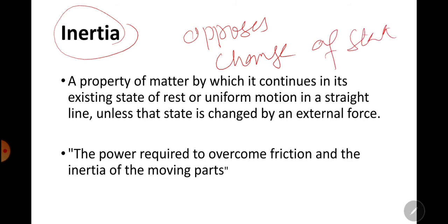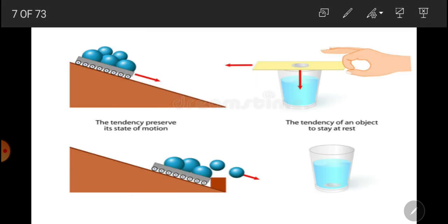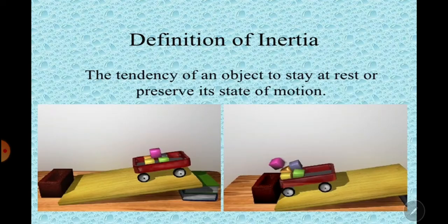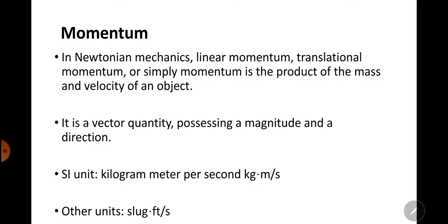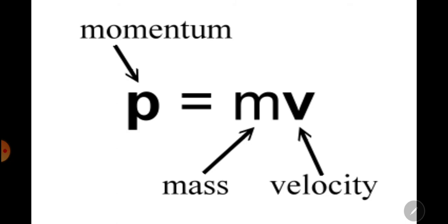We studied Newton's first law and Newton's second law. Before that, we explained momentum — momentum is the product of mass and velocity, that property from which we can say how difficult or easy it is to stop a moving vehicle or bring that vehicle into motion.